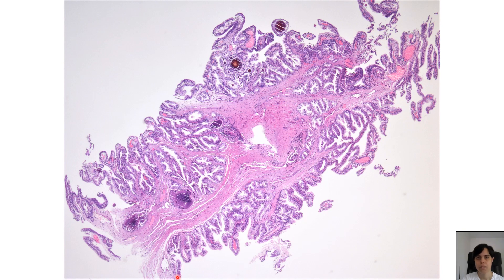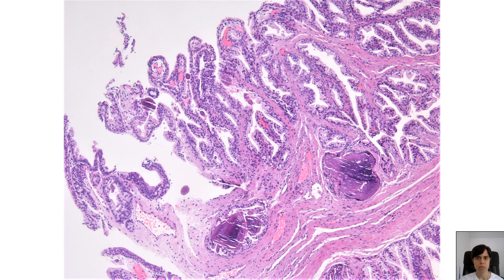Here is a low-power view of a lesion described on the cystoscopy report as a small papillary mass protruding into the urethral lumen from the posterior wall. We see a fibromuscular stroma containing benign prostatic glands with their typical undulating luminal contours and some intraluminal concretions or corpora amylacea. The surface epithelium mostly resembles that of the prostatic glands and is covering delicate papillary projections with true fibrovascular cores. On a closer view, we also notice some intermixed benign urothelium focally, and we can better appreciate the papillary nature of the lesion with these thin, true fibrovascular cores.